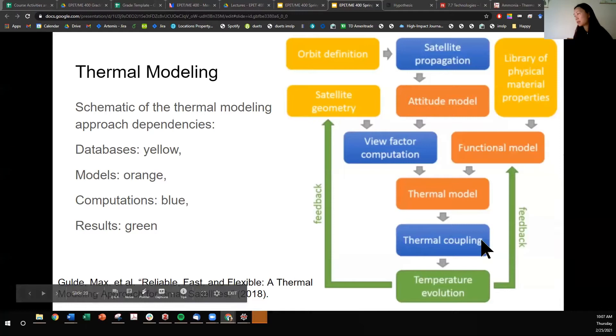And then thermal coupling is going to be something that stitches distinct components within the thermal model together, calculating the amount of heat that transfers. And then your results, what you ultimately want, is your temperature over time. This model you'll see has a lot of arrows where there are nodes, but there are also loops. So you only have to define the orbit once in the library of materials once, but then once you enter this loop, you go back and redefine as an iteration over time.